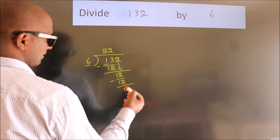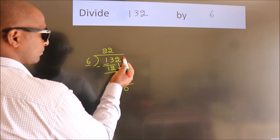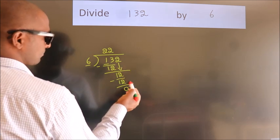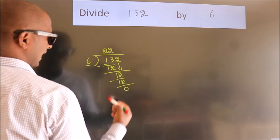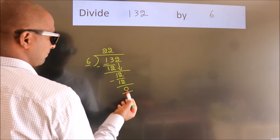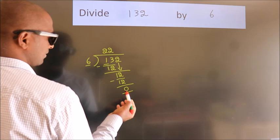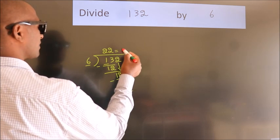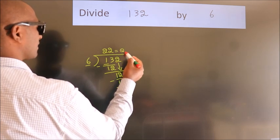After this, there are no more numbers to bring down and we got remainder 0. So, this is our quotient.